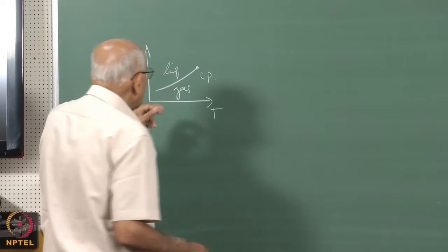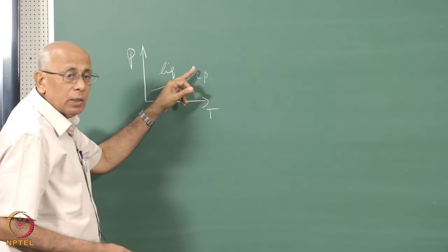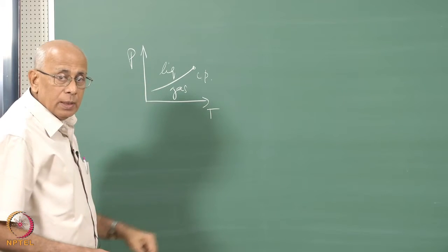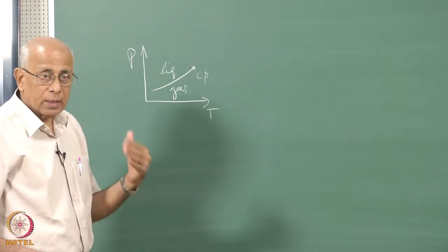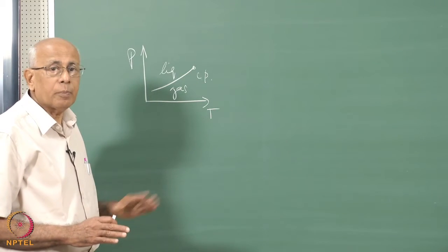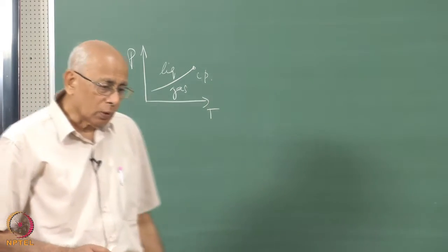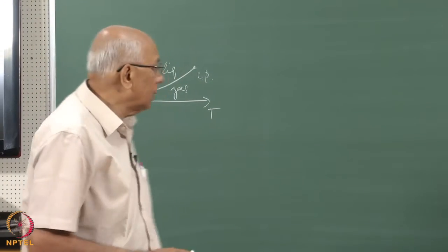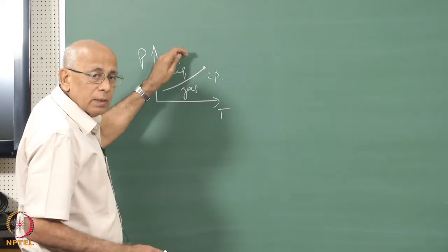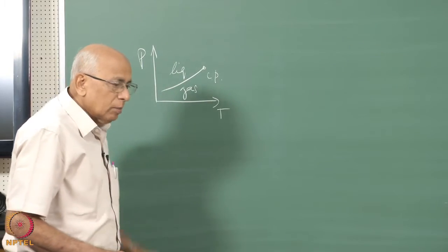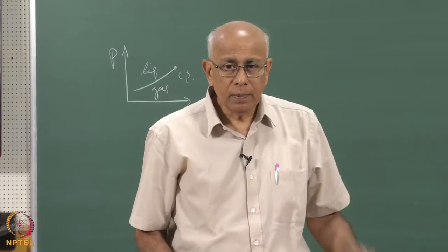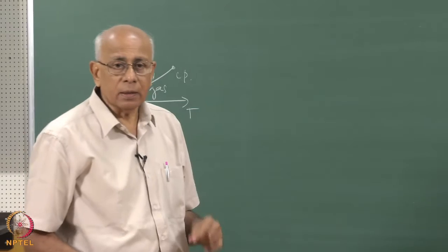This density difference slowly vanishes as you approach the critical point, but across the coexistence line the difference is discontinuous — a finite but discontinuous change in this so-called order parameter. Now the critical point is a point of singularity. That is the place where thermodynamics fails, and it fails for several very interesting, very deep reasons.